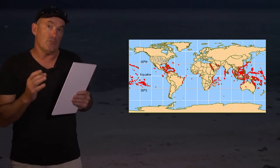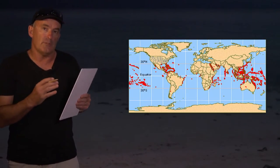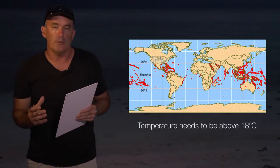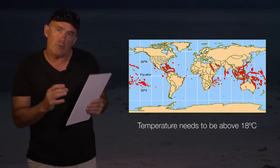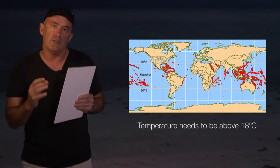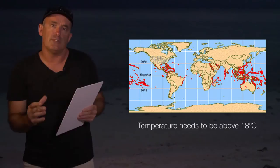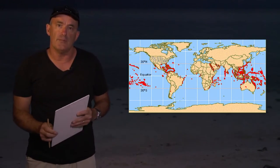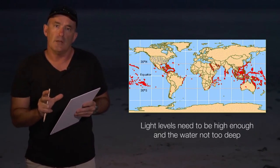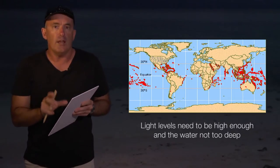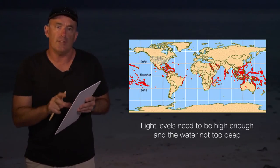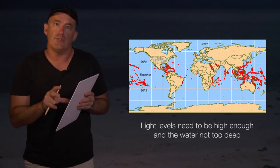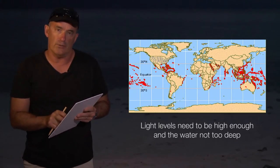As we look at this distribution, it becomes clear that temperature is likely to be important. Carbonate reef systems do not persist where temperatures drop below 18 degrees Celsius. At the same time, we also know that light levels need to be high enough to sustain the photosynthetic rates of the symbiotic dinoflagellates in the corals.